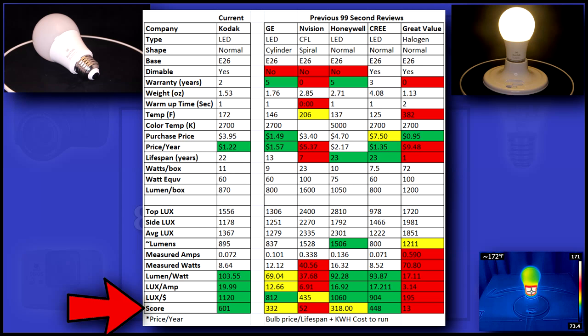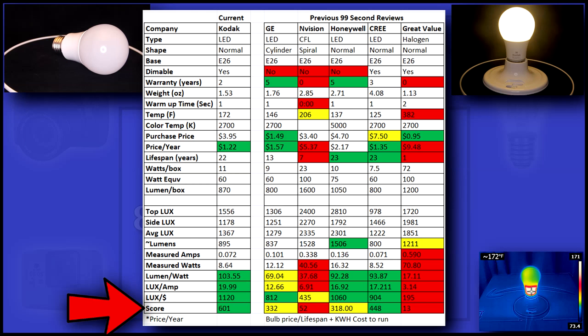In the end, I give each bulb a score. This score is calculated by using all the variables above, including price per year, lumen per watt, warranty, lifespan, and more. With a score of 601, this bulb now tops my list for recommended lighting.